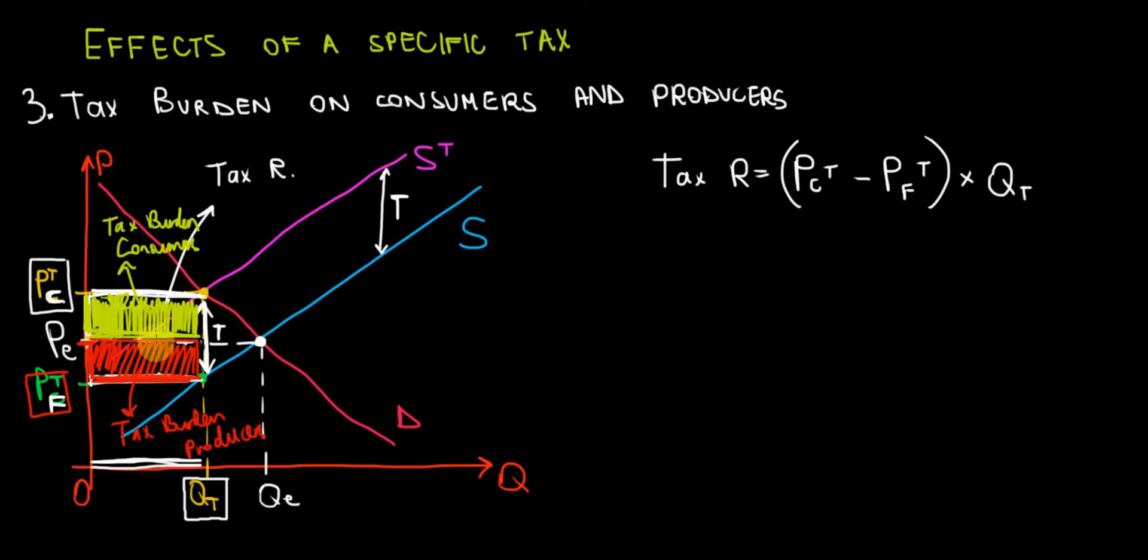On one side, it's coming from customers because customers have to pay a higher price on the market. And on the other side, it's coming from the firms because the firms have to pay from that price a share to the government, which happens to be the tax amount. And therefore, that's why the tax revenue has two sources of burden: one on the consumers and one on the producers.